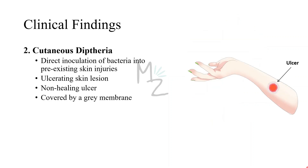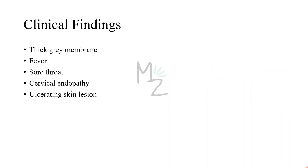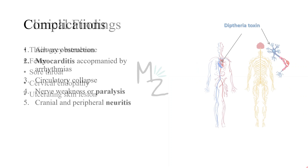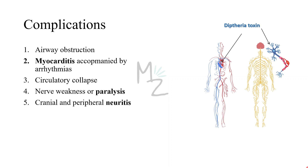The second type is cutaneous diphtheria. It causes ulcerating skin lesions covered by a gray membrane. These lesions are often indolent and do not invade surrounding tissue. Systemic symptoms rarely occur, and this will be a non-healing ulcer. Symptoms summary: thick gray pseudomembrane, fever, sore throat, and ulcerating skin lesion. Complications include extension of the membrane into the larynx and trachea causing airway obstruction, myocarditis with arrhythmias and circulatory collapse, and nerve weakness or paralysis, especially of cranial nerves. Paralysis of soft palate and pharynx muscles can lead to regurgitation of fluids through the nose, and peripheral neuritis affecting extremities also occurs.